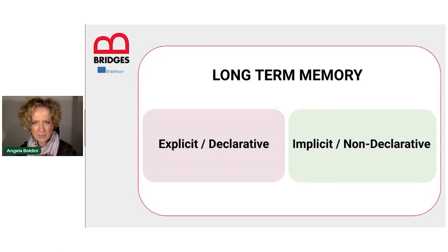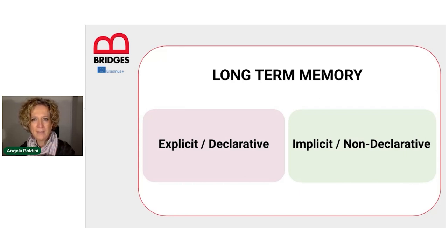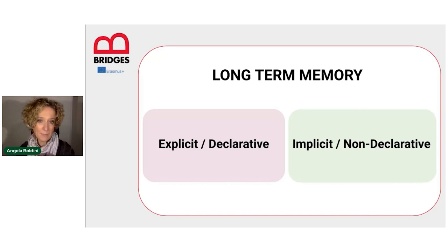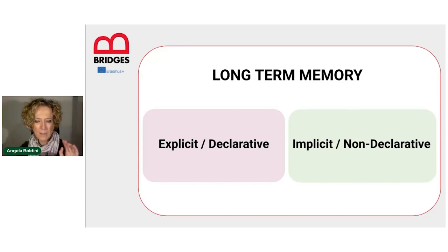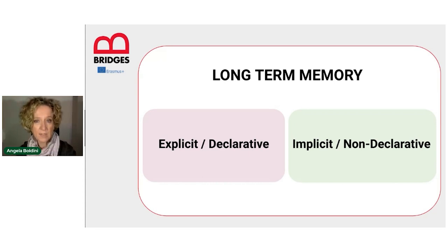As you may already know, there are different types of long-term memory. Here you see a first basic schema and categorization of the two main types of long-term memory: explicit memory and implicit memory. The discriminating factor between the two is the presence or absence of conscious awareness of information retrieval. We talk about explicit or declarative memory when the person is aware that he or she is retrieving information from memory. We talk about implicit or non-declarative memory when the person is not aware that he or she is retrieving information from memory.